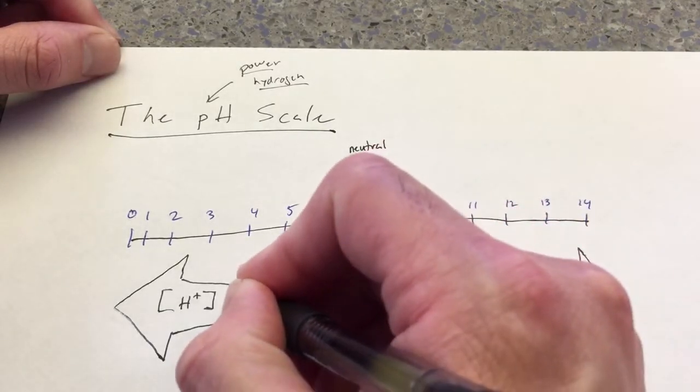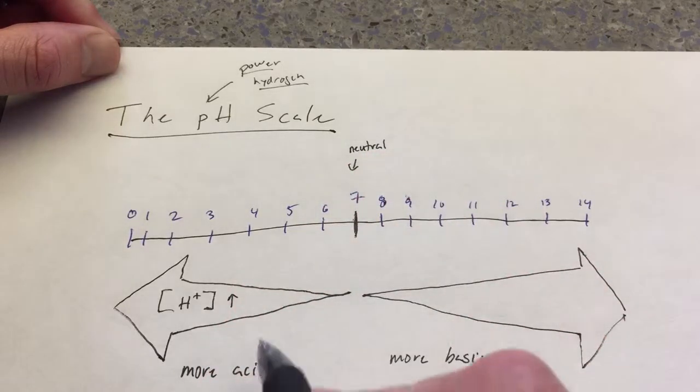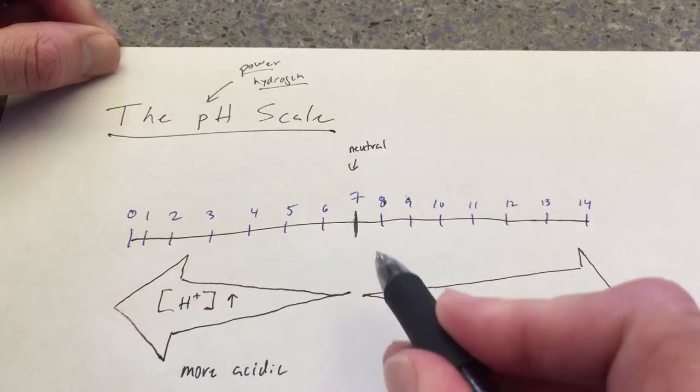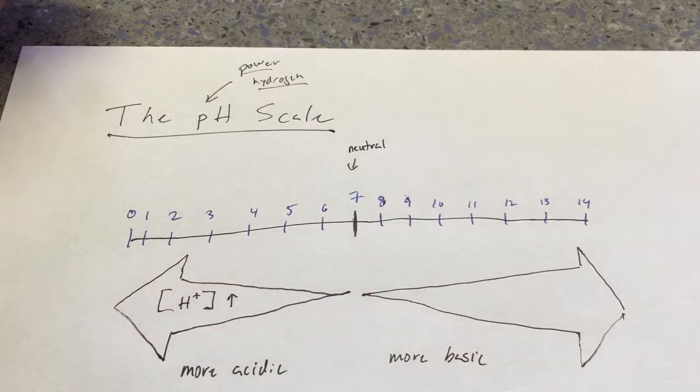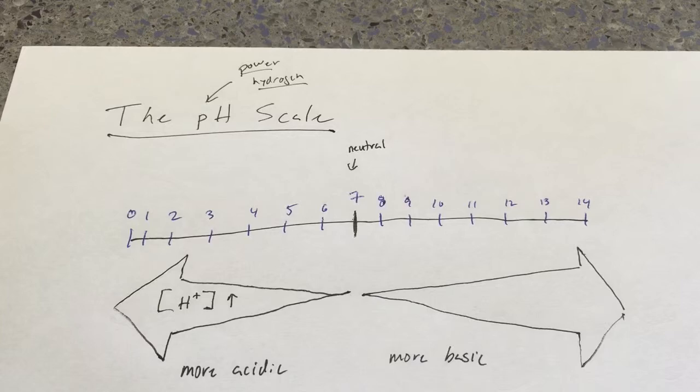In other words, hydrogen ion concentration goes up as pH goes down. That's really kind of weird, but yeah, it's kind of counterintuitive.